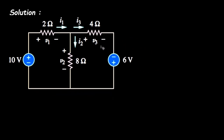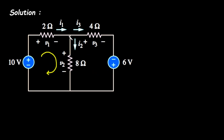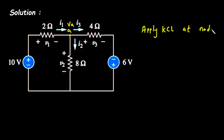For the solution, first we will take this circuit. Let's assume the direction of current is clockwise. Let's say this is current I1 and this is current I2. Or we can directly apply KCL at this node. So let's say this is node A with voltage VA.